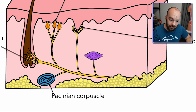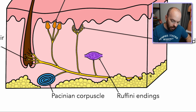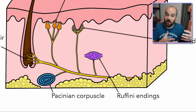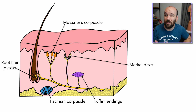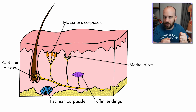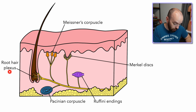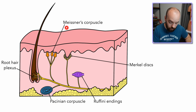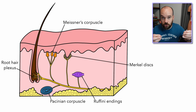Next we have Ruffini's endings. In diagrams, they're always drawn in a stretched-out shape, which helps remember that they detect stretch in the skin. They're not super well understood, but they are identified as detecting skin stretch, and they're slow adapting — so if your skin is stretched, they'll continue detecting and sending signals to the brain. To summarize the five main mechanoreceptors in the skin: root hair plexus, Pacinian corpuscle for deep pressure, Meissner's corpuscle for light touch and movement, Merkel's discs for light touch and shape, and Ruffini's endings for stretch.